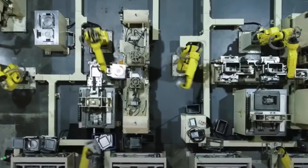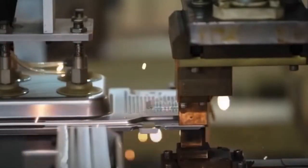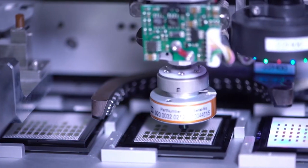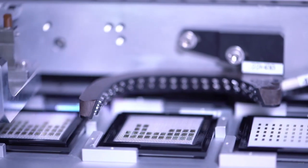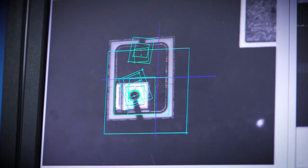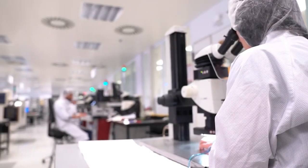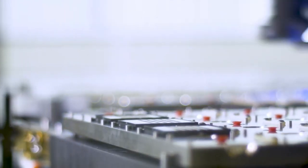But what's a microwave without its brain? Enter the circuit board assembly area, where the magic of electronics comes to life. Here, skilled technicians with hands as steady as surgeons bring together tiny components. Each solder, each wire contributes to the intricate dance of electrons that will control your microwave.